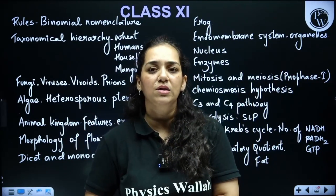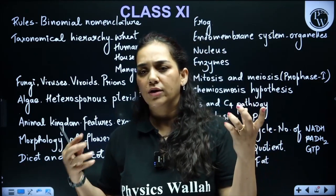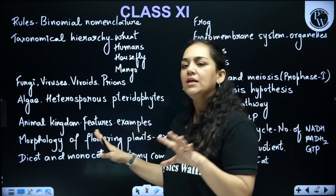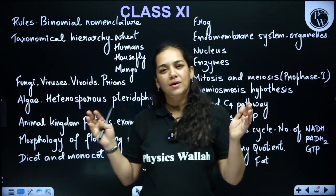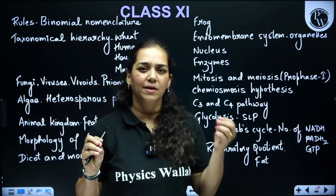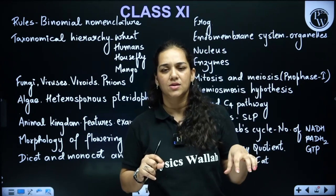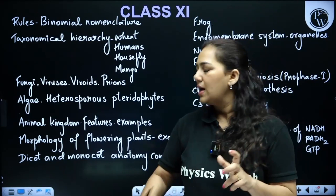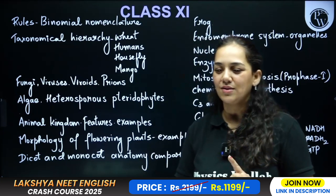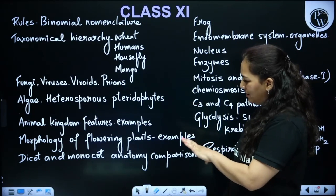Dicot and monocot anatomy comparisons are important: dicot stem vs. monocot stem differences, stem vs. root differences, and leaf dicot vs. monocot differences can all be asked. If you have covered these differences between root, stem, and leaf, you're done with the chapter. Questions on tissues like parenchyma and collenchyma have also been asked — but since you've studied this in lower classes, it should not be too difficult, especially if you've done your practicals.